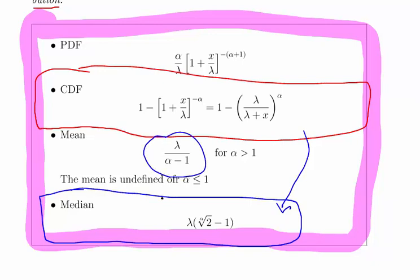We'll also note the mean for the second question. The mean is undefined for alpha less than or equal to 1. Let me fix that to highlight the fact that this is the alpha root of 2 minus 1. There's a little alpha in that square root notation there, a bit of a clunky way to express it.